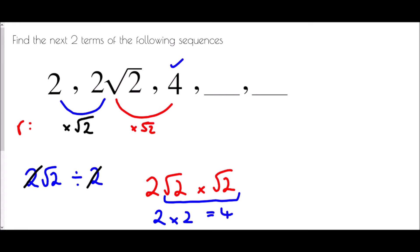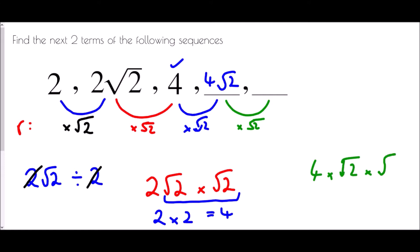From now on we're multiplying by √2. So 4 times √2 is 4√2. Then multiplying 4√2 by √2 again: √2 times √2 is 2, so we get 4 times 2, which is 8. The final term in that sequence is 8.